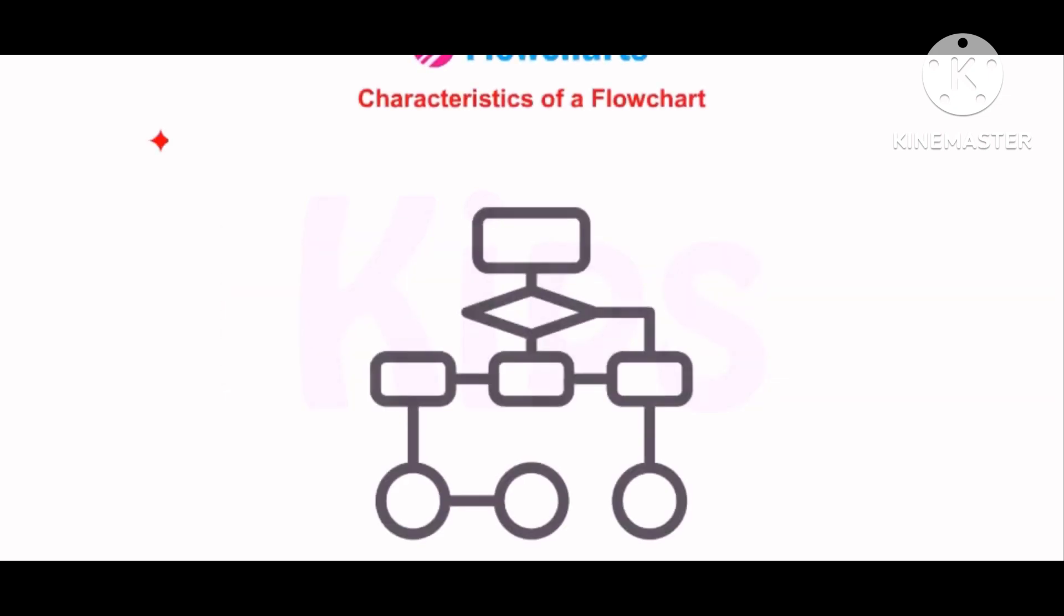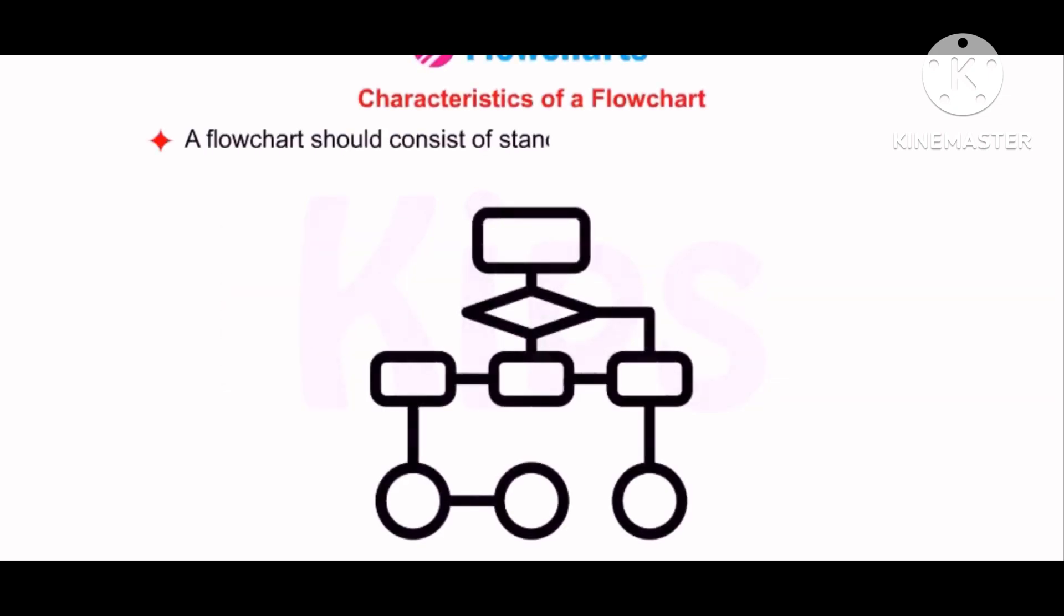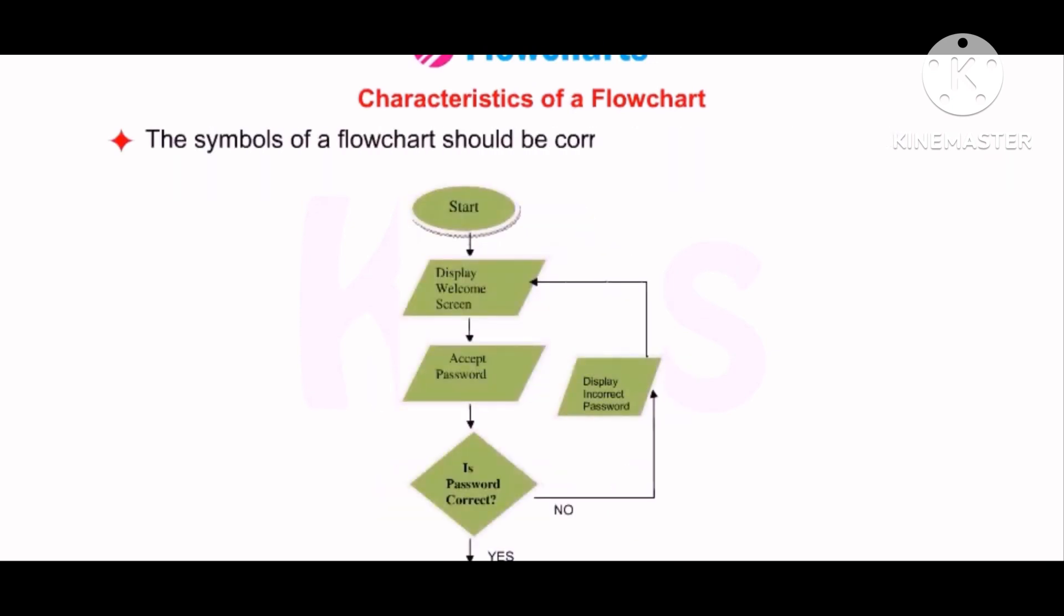Characteristics of a flowchart: A flowchart should consist of standardized and acceptable symbols. The symbols of a flowchart should be correctly used according to the rules. A flowchart should have short, clear and readable statements written inside the symbols. A flowchart must have a clear start and end. A flowchart must flow in a logical order. A flowchart should have suitable and common keywords such as read, input, print, write, etc. A flowchart must have arrows indicating the flow of instructions.